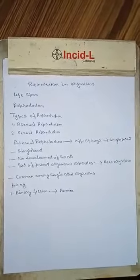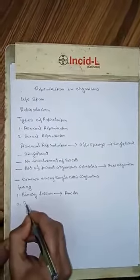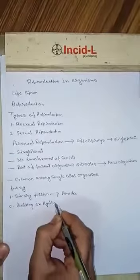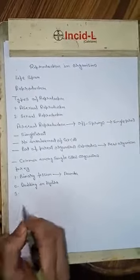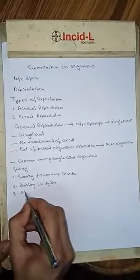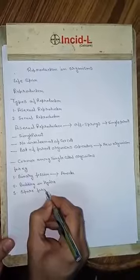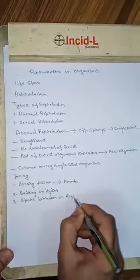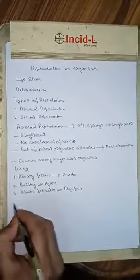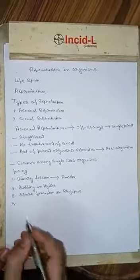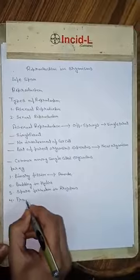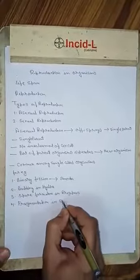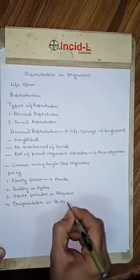The second example is budding in hydra. The third one is spore formation in rhizopus. And the next one is fragmentation in spirogyra.